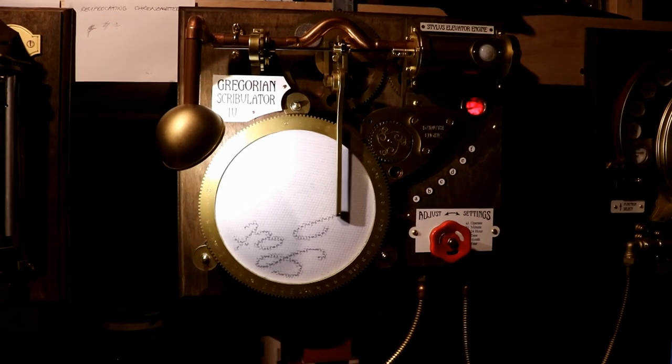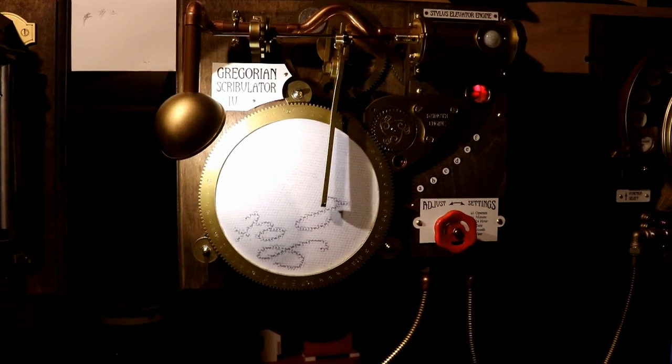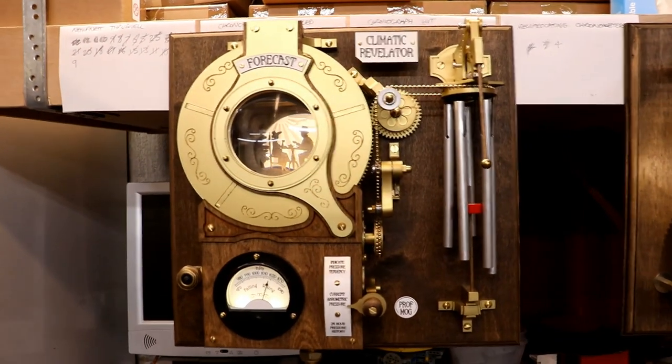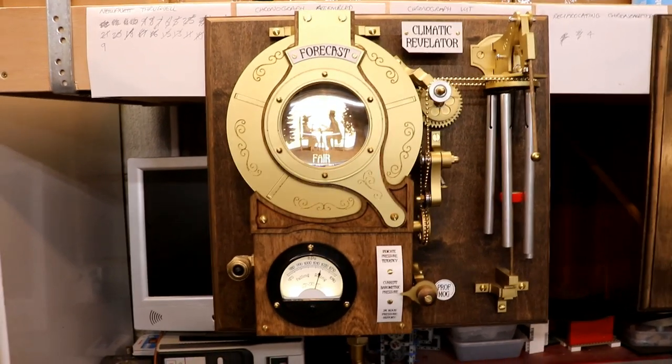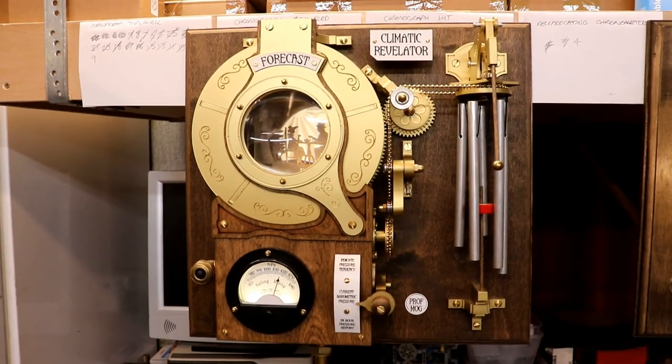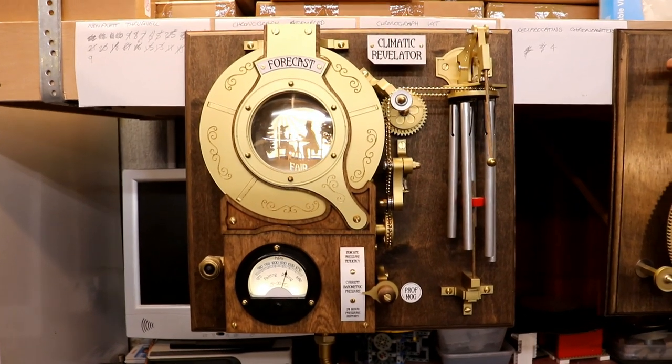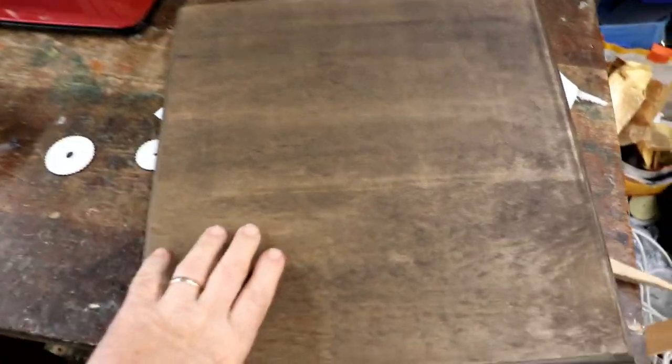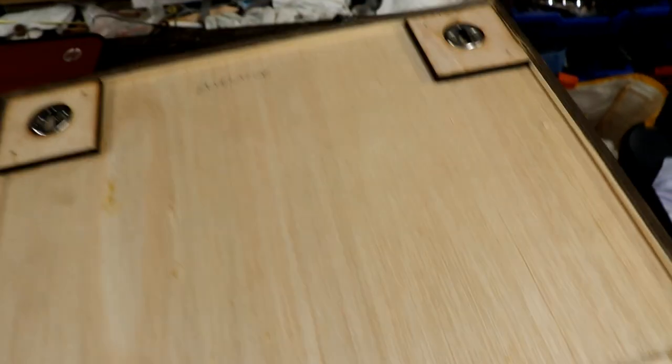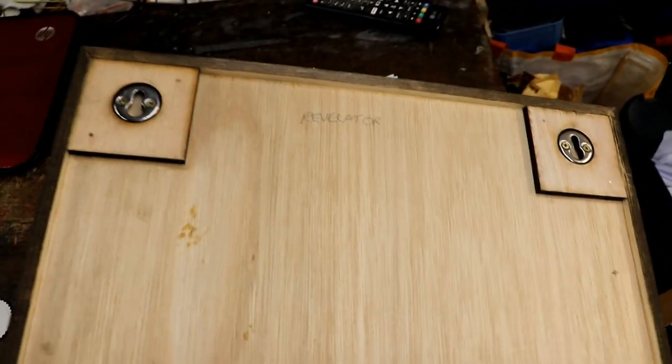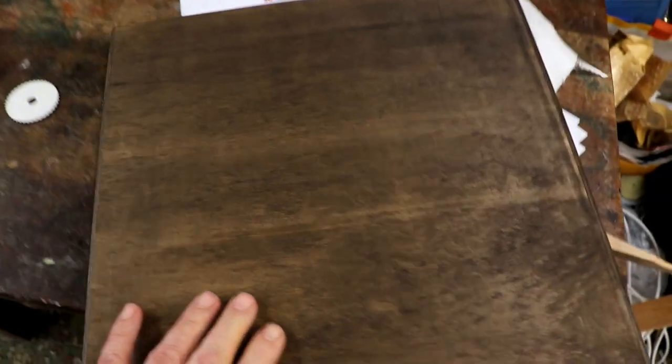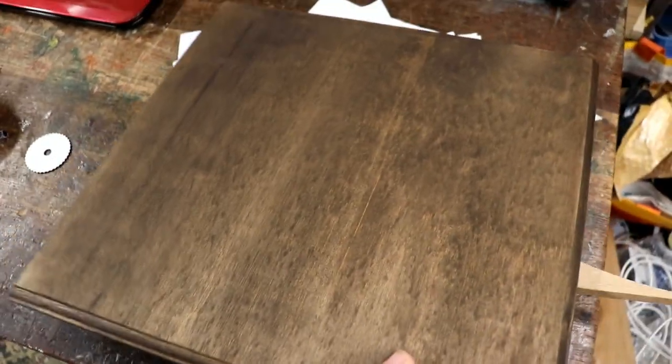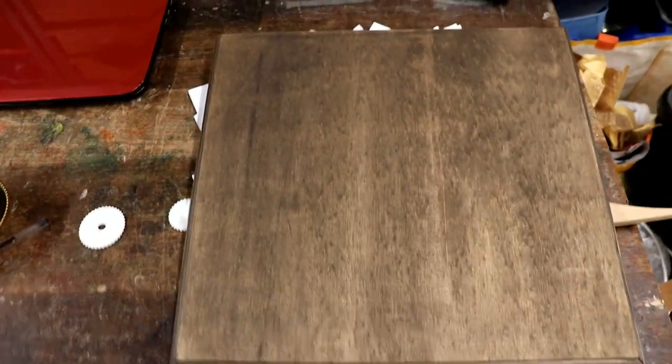So whilst they're being checked and tested, I've got another climatic revelator to make for a customer in the USA. When I was making the base for the chronological engine, I also made one for the revelator with handy instructions on the back. I made one while I was cutting all the beading, so I've got a base to be working on.